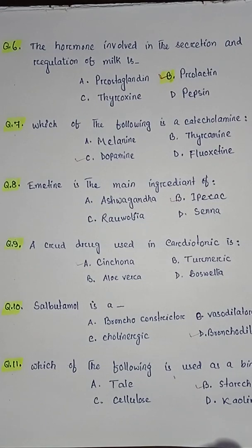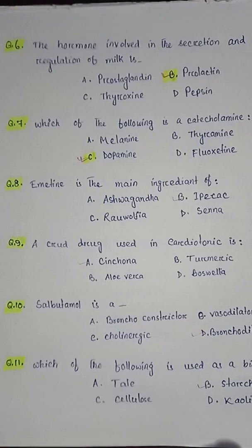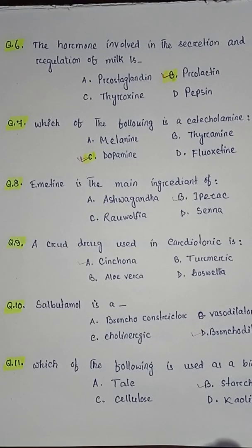Question number seven: which of the following is a catecholamine — option A melanin, option B tyramine, option C dopamine. Question number eight: the main ingredient of ipecac is — option A ashwagandha, option B ipecac, option C rauvolfia, option D senna. So the correct answer is option B ipecac.